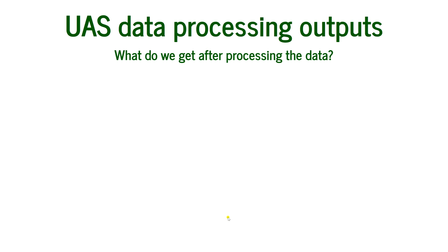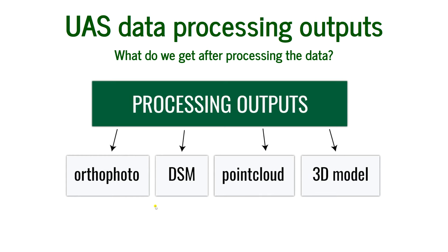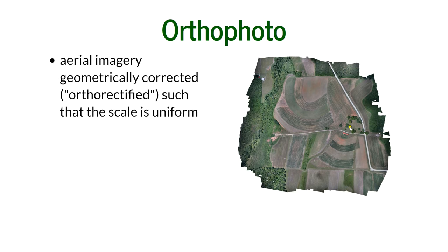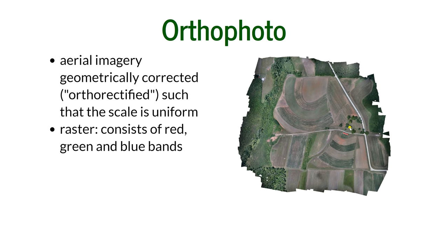There are four basic outputs after processing: an orthophoto, a digital surface model, a point cloud, and a 3D model. The orthophoto looks like an aerial photo but is more than that — it is geometrically corrected so the scale is uniform. It is not just one photo; it can be used as a map with a scale, allowing you to measure distances and perform cartographic calculations. It is a raster consisting of red, green, and blue bands for RGB data, or multiple bands if a multi-spectral sensor was used.